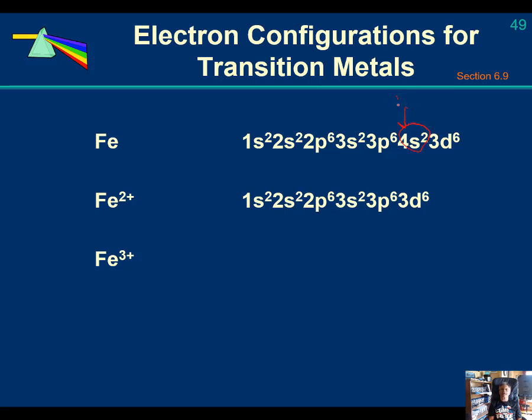Because n equals 4 is the valence shell. And the electrons in that valence shell, those are the ones that will leave iron first in order to make the element more stable. So the n equals 4 valence electrons will be the first to leave in order to give a more stable electron configuration.